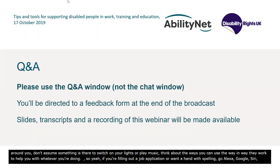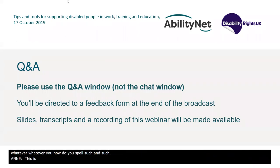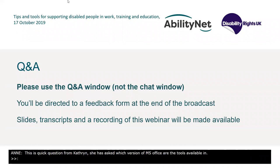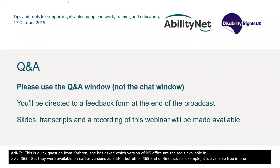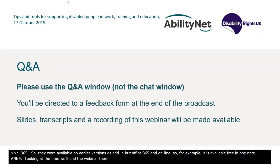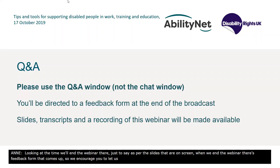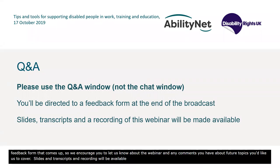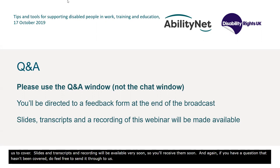Just before wrapping up: which version of MS Office are the tools available in? Adam: Office 365 and online. They were available on earlier versions as an add-in, but Office 365 is the main one. For example, it's available free in OneNote, which is a free product anyway. Just to note, when we end the webinar there's a feedback form — we encourage you to let us know any feedback and comments about future topics you'd like us to cover. Slides, transcripts and the recording will be available very soon. If you have a question that hasn't been covered, feel free to send it through.